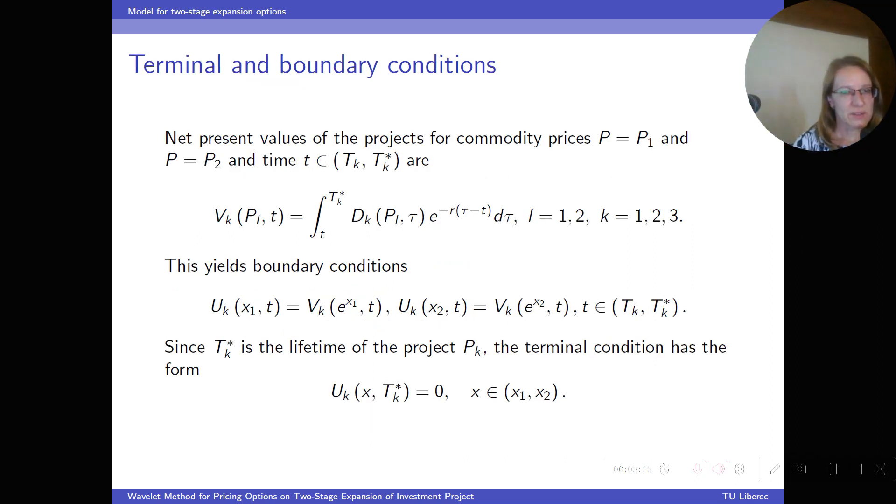The equation must, of course, be equipped with appropriate terminal and boundary conditions. The boundary conditions are determined using the net present value of the project at boundary points. And the terminal condition at time T_k star is zero because the value of the project is zero when the lifetime of the project T_k star is reached.